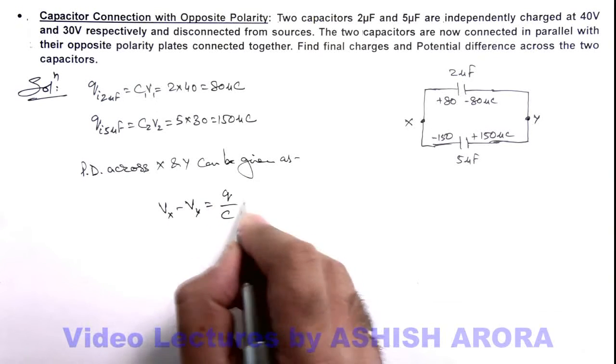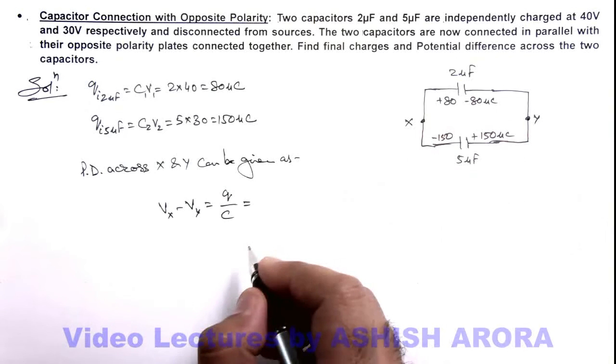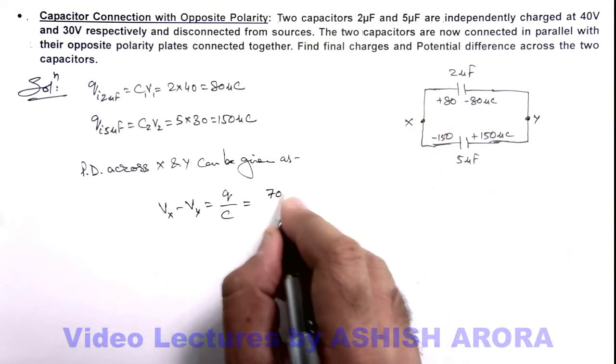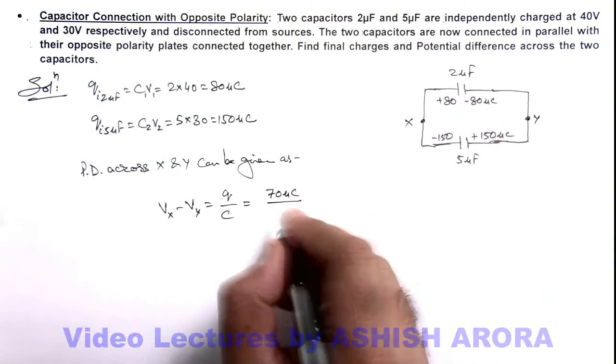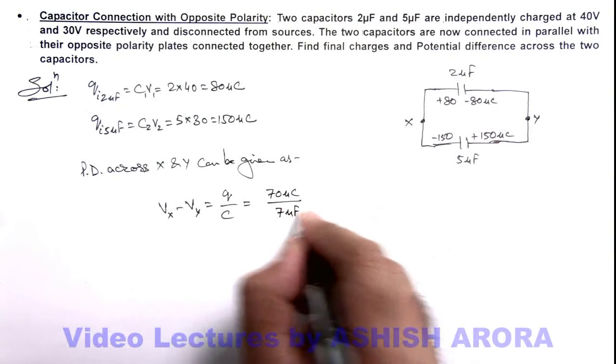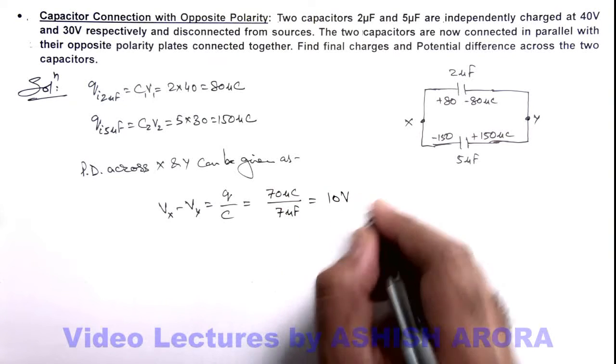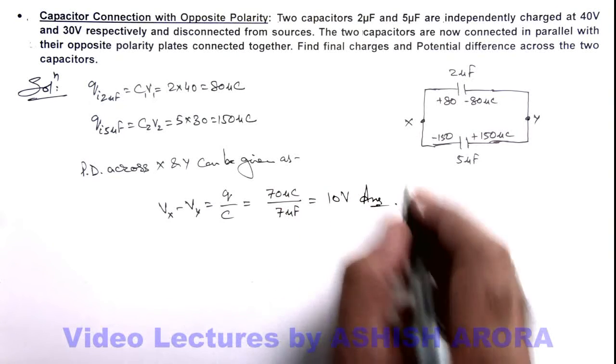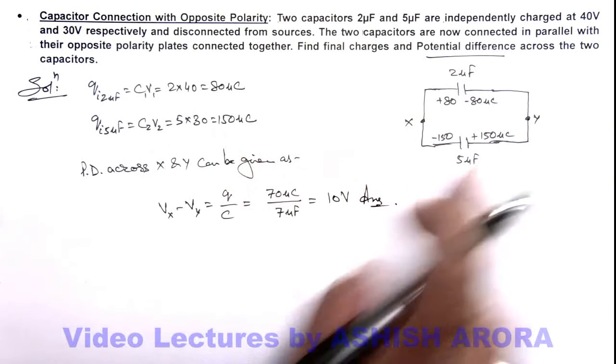The charge in combination of these capacitors is 70 microcoulombs, divided by the total capacitance of 5 plus 2, which is 7 microfarads. This comes out to be 10 volts, which is one answer to this problem—the potential difference across the capacitors.